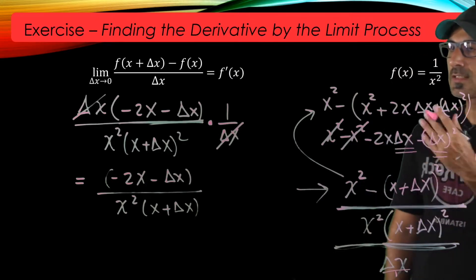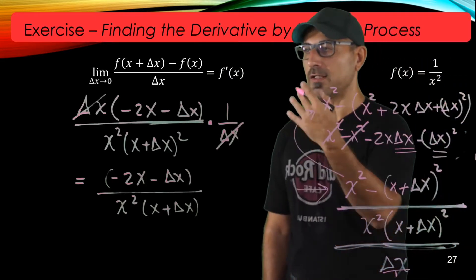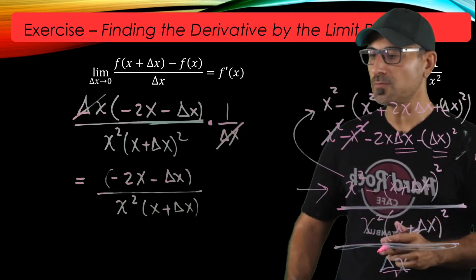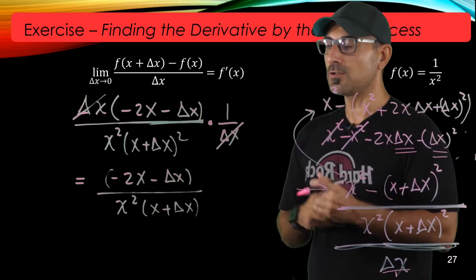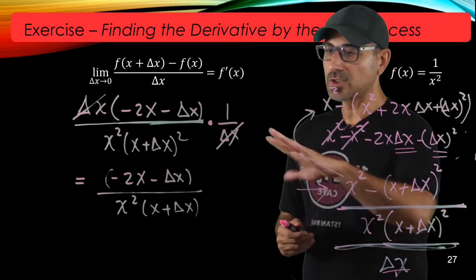So at this moment we can stop and check if the limit operation is going to work on the simplified version of the original function or ratio. So let me just clean this.